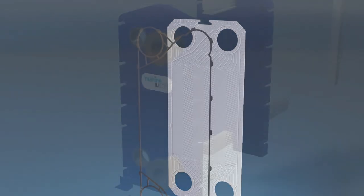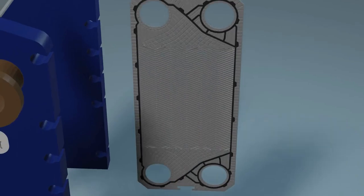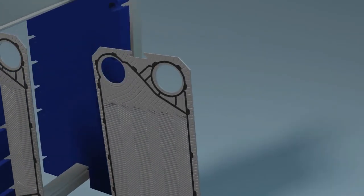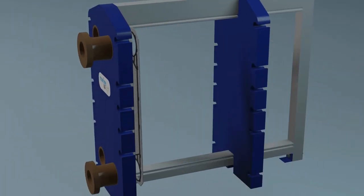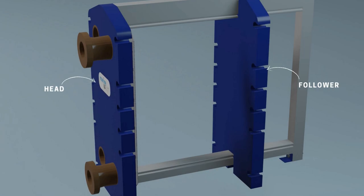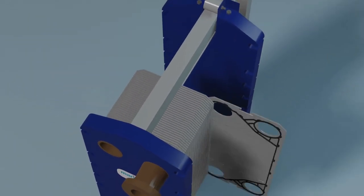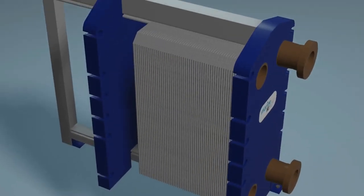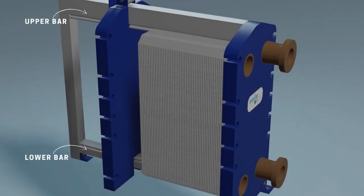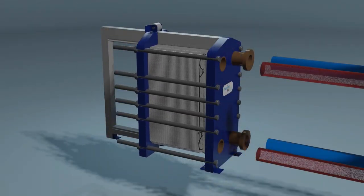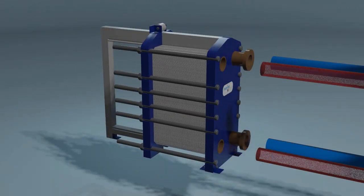The plates are stacked with each other in the cooler frame, which consists of a head and follower column that make the end frames of the exchanger, the lower and upper bars in which plates are arranged, and tie bolts which compress all plates together.